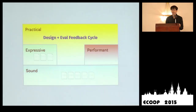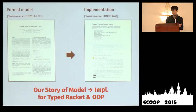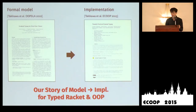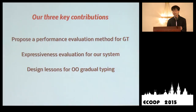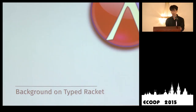To make this idea concrete, this talk is about the design and evaluation cycle we went through for our gradual type system, in the context of Typed Racket — a gradually typed sister language of the Racket programming language. This is our story going from a model of a gradual type system to an implementation: from the sound foundation built in OOPSLA 2012 to an implementation that is both expressive and performant. There are three key contributions: first, a performance evaluation method for gradual typing; second, an expressiveness evaluation; and third, some design lessons for object-oriented gradual typing.